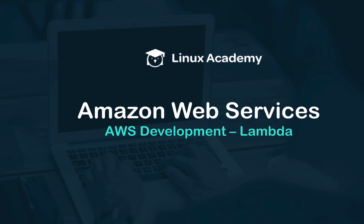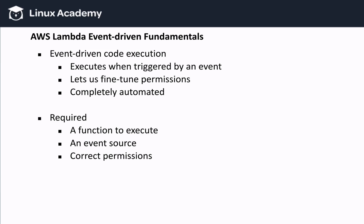Welcome back. For this lesson, we're going to go over events in more detail because we need to understand events before writing Lambda functions. Why do we need to understand events? Because Lambda is event-driven. Event-driven means that our code gets executed when triggered by an event. This goes back to what we discussed in the first lesson about serverless architecture. This kind of event-driven code execution is really nice because it completely automates execution for us. We set it up once and then it runs according to the way we set it up.